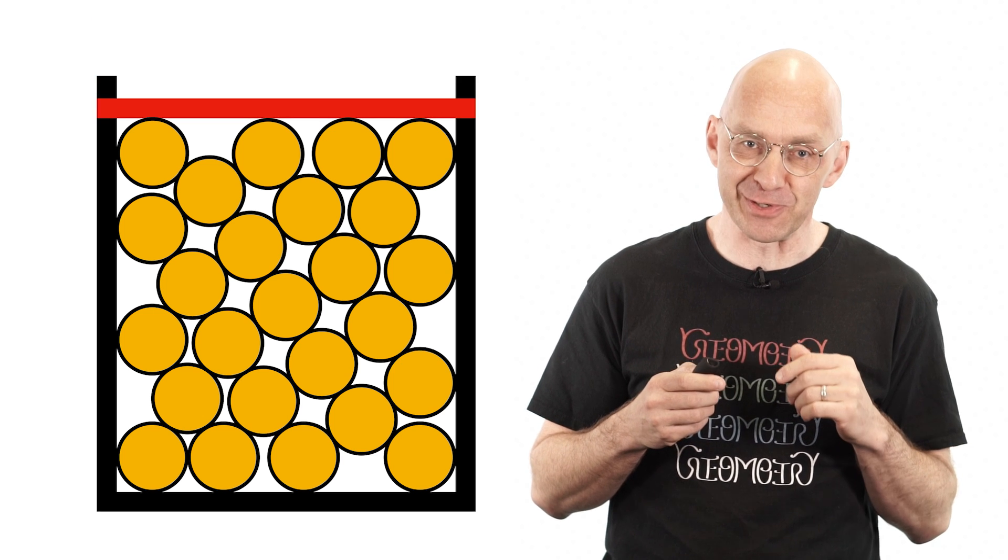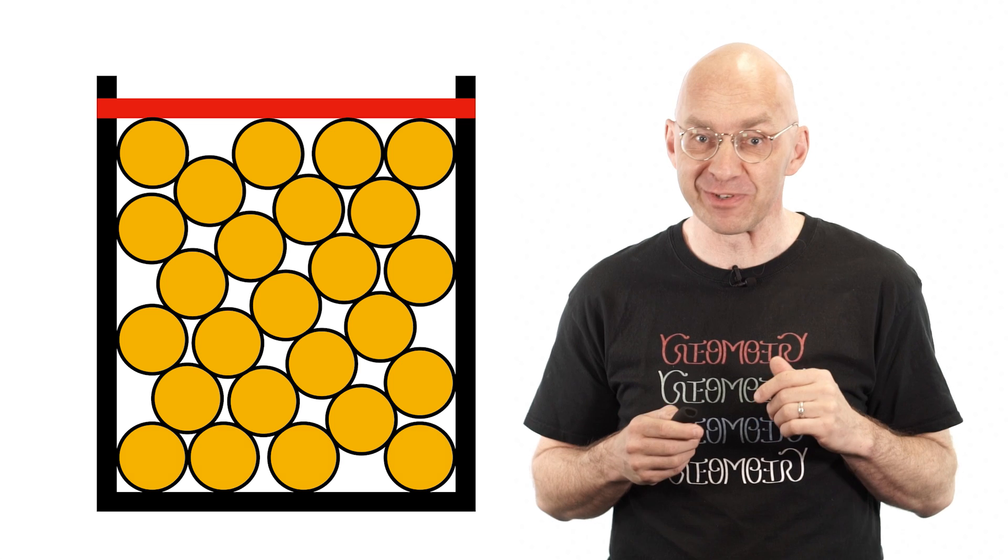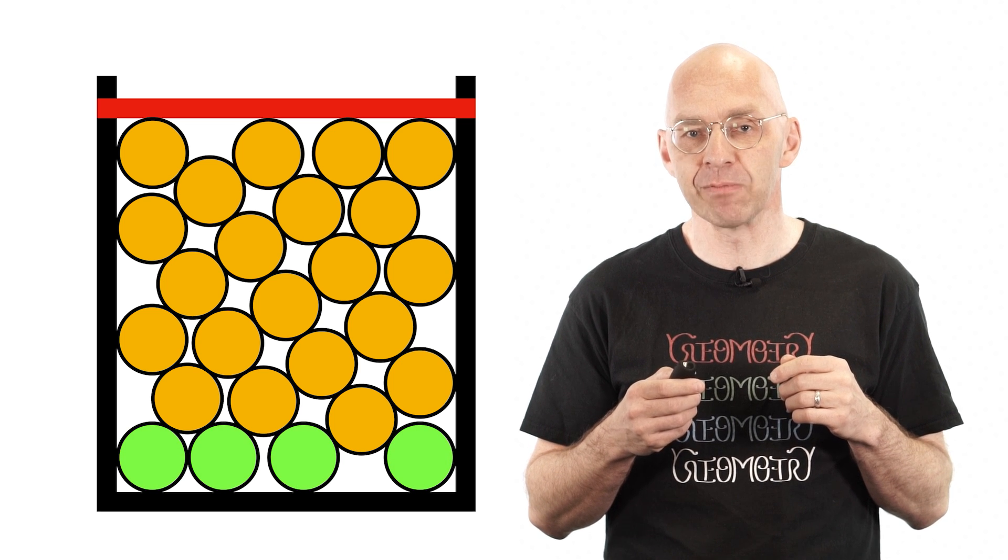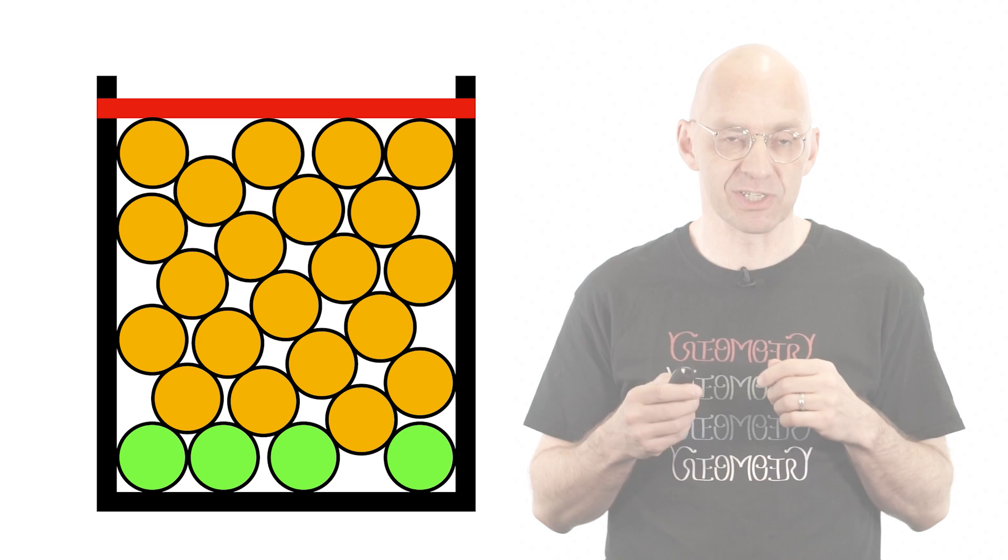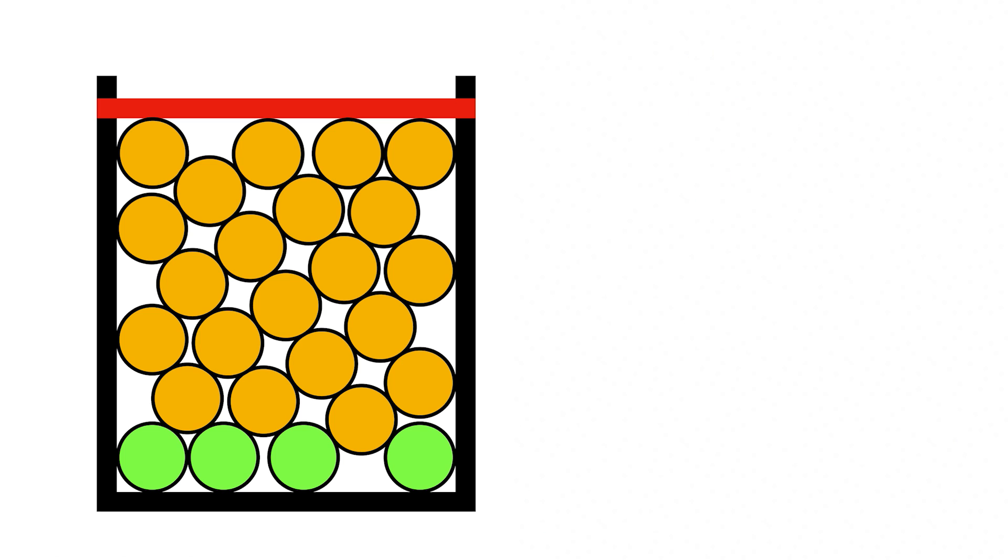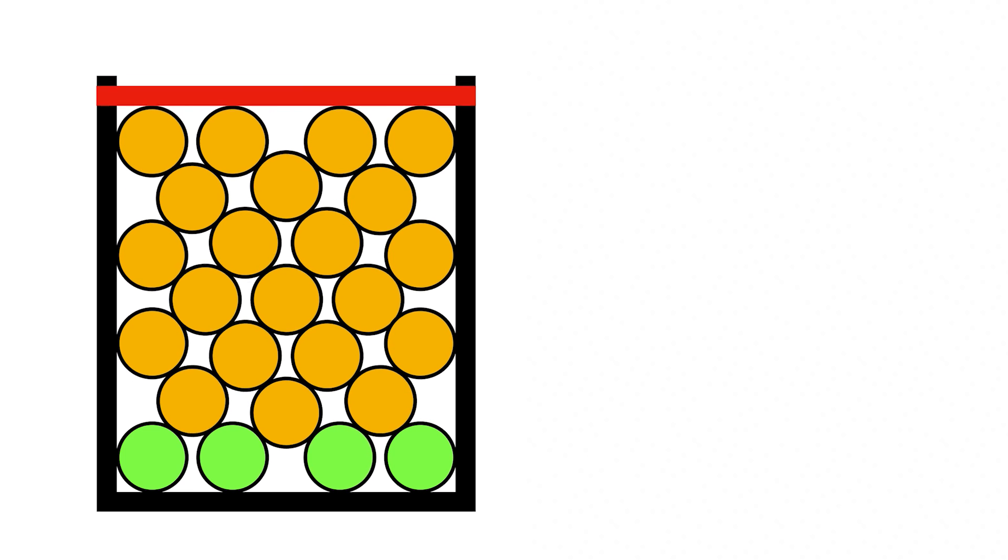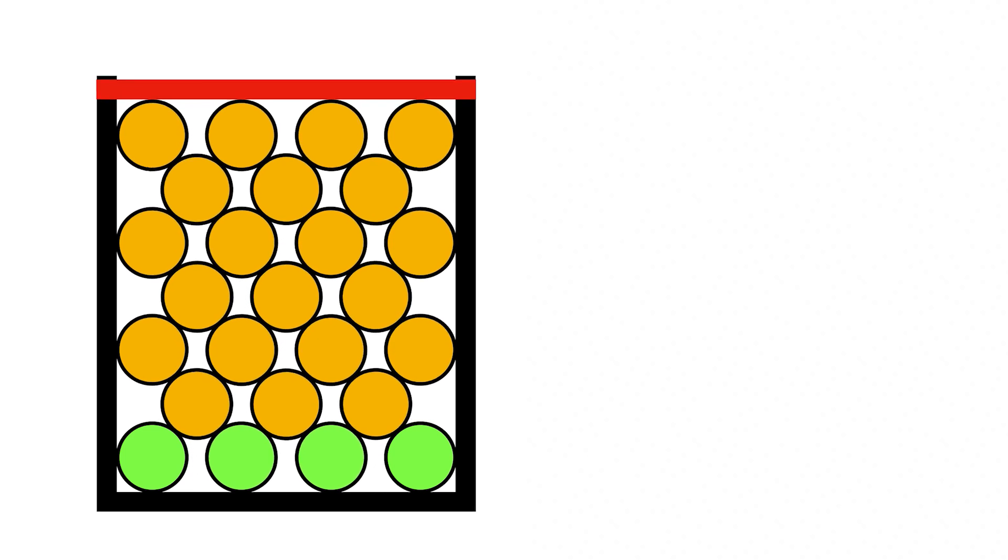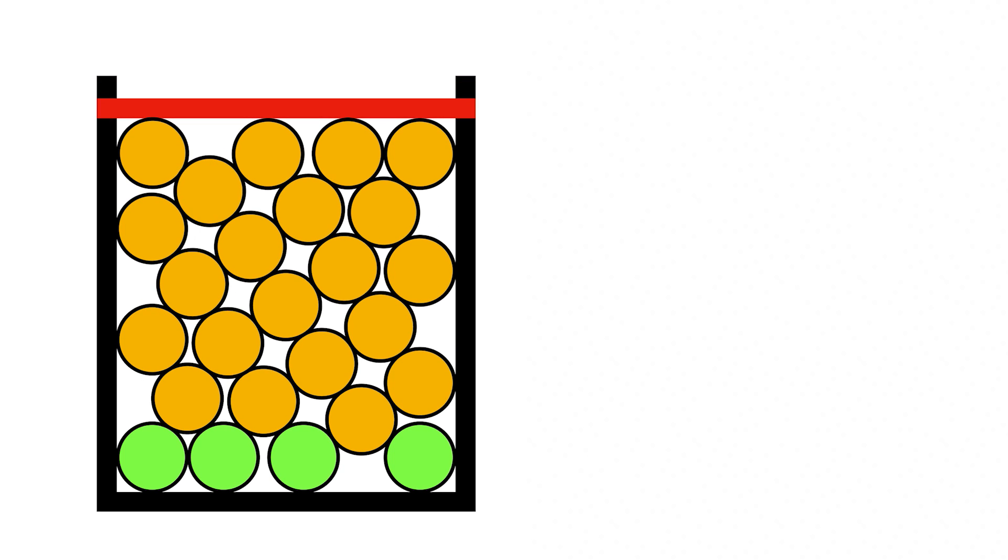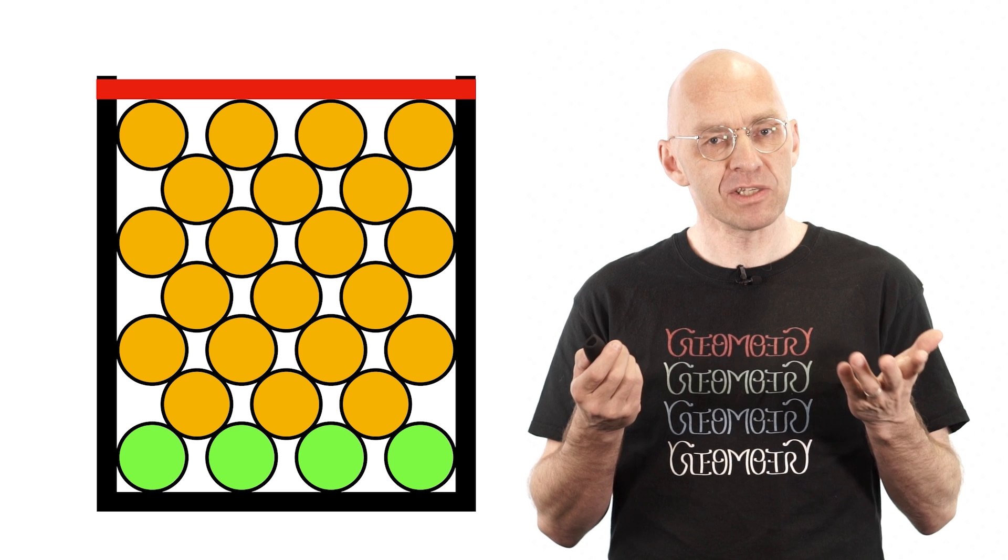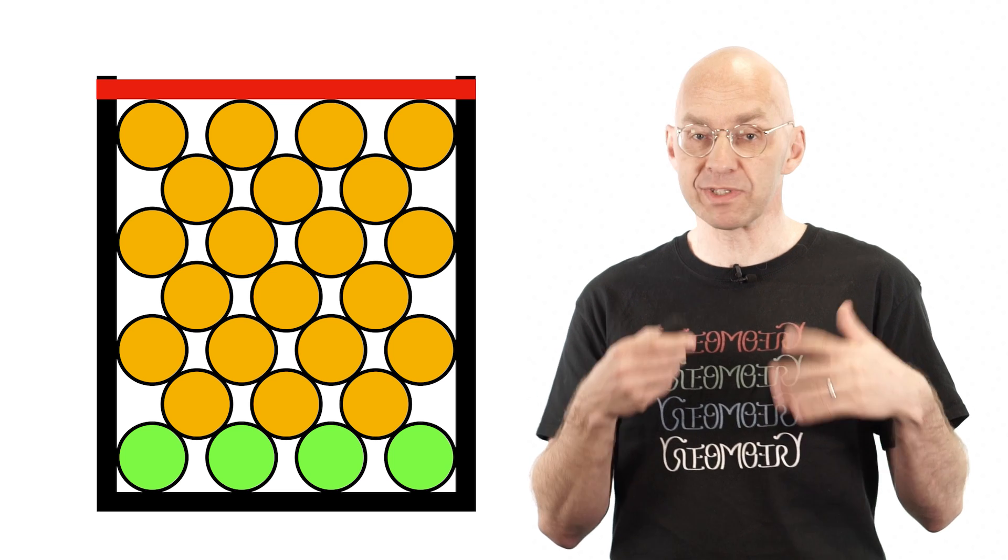Surprised? I sure hope so. And this is not a fluke. Let's move the middle two circles of the first row around a little more and see how the stack changes. Pretty mesmerizing, isn't it? So why is row 7 always perfectly level? What's the secret?